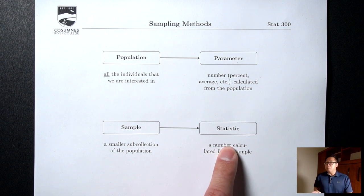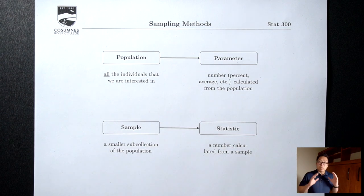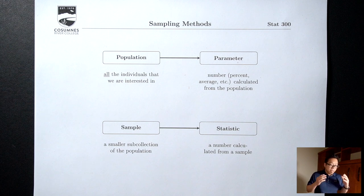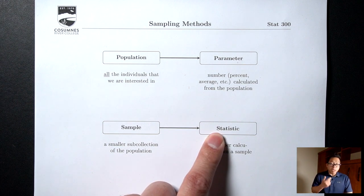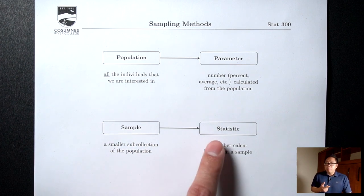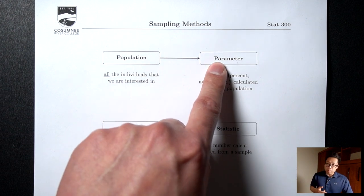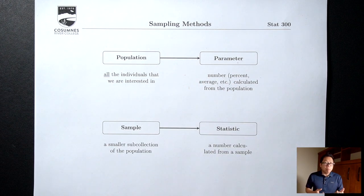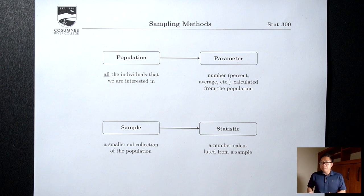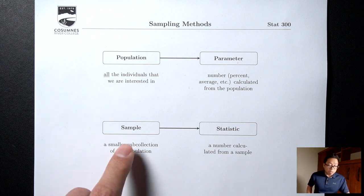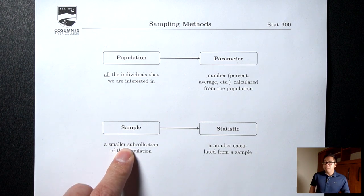It didn't come from everybody in the population. The central theme of statistics is: my hope is that if I do things correctly, that 22% which I got from a thousand people is a good approximation to the parameter. So my hope is that I can say about 22% of people in Sacramento have a PlayStation 5, even though I got that 22% from asking just a thousand people in my sample. That's the central theme in statistics.